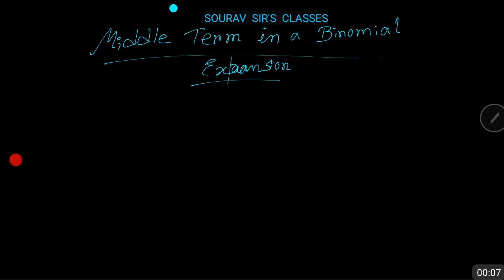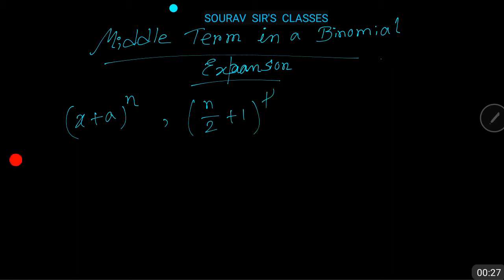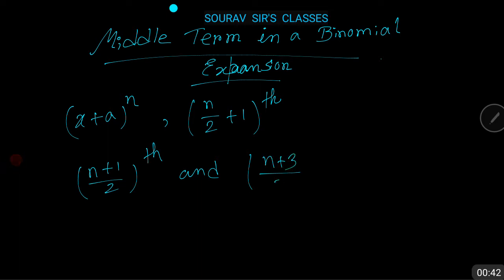Hello students. Now we are discussing about the middle term in a binomial expansion. If n is an even natural number, then in the binomial expansion of (x + a)^n, the (n/2 + 1)th term is the middle term. If n is an odd natural number, then the (n+1)/2 th and (n+3)/2 th terms are the middle terms in the binomial expansion of (x + a)^n.